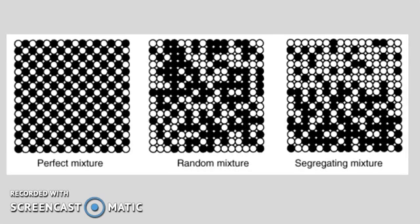Particle segregation is when particles separate based on different properties. There are three main types of mixtures.